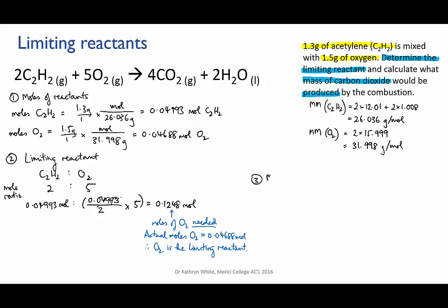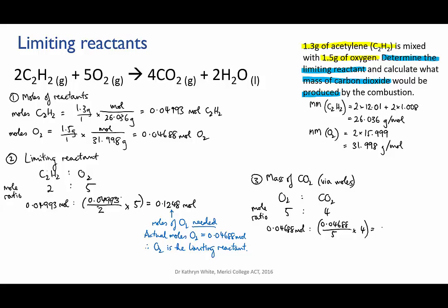Step three is to calculate the amount of carbon dioxide formed. I know my limiting reactant — that's oxygen — and that's going to determine how much CO2 is formed. So I need to use the mole ratio to work out the moles of product. The amount of oxygen I have is 0.04688 moles. Be very careful at this point to put in the amount that you actually have present, not the hypothetical amount you would need to react with the excess reactant. The mole ratio is 5 oxygens to 4 carbon dioxides, so I divide by 5 and multiply by 4 to find 0.03750 moles of carbon dioxide produced.